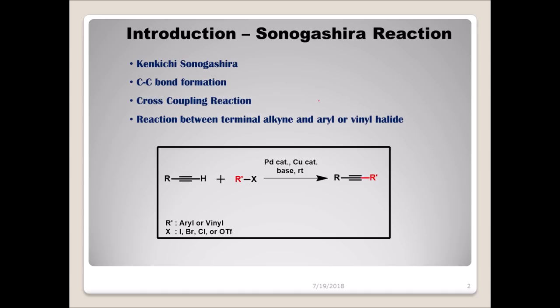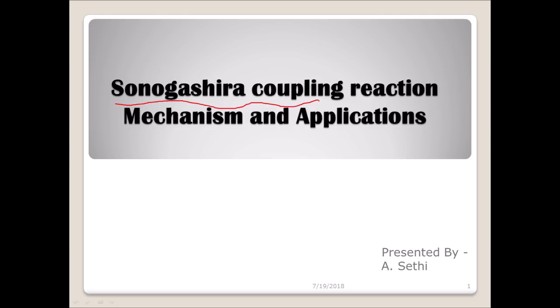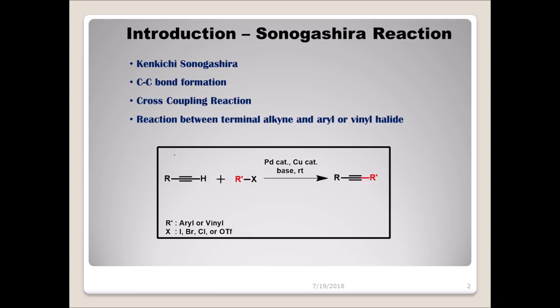In Sonogashira reaction, we have an alkyne, and then we can have an aryl halide or a vinyl halide. This X group can be a halogen or a triflate. In other coupling reactions like Suzuki we used organoboranes, in Hiyama coupling we used organosilanes, in Stille coupling we use mercury compounds. But here we are simply using alkynes — no carbon-silicon or carbon-boron bonds needed.